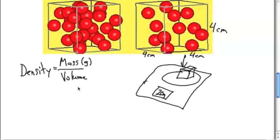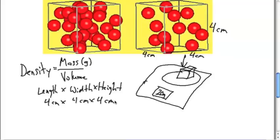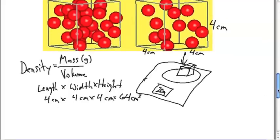So to find the volume, we can take length times width times height. And for this cube here, we would take four centimeters times four centimeters times four centimeters. This gives us a grand total of 64 centimeters cubed. The cubing comes because we take a centimeter times a centimeter times a centimeter. So it's three centimeters, which we call centimeters cubed.